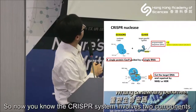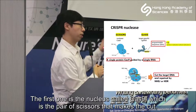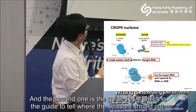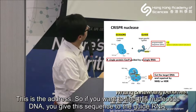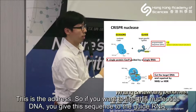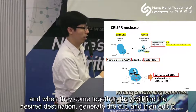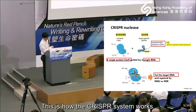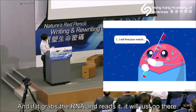The CRISPR system involves two components. The first one is the nuclease called Cas9, which is the pair of scissors that makes the cuts. The second one is the guide RNA, which guides the scissors to tell where they should cut. So the guide RNA is the address — if you want to find a specific nucleotide sequence in the DNA, you give that sequence to the guide RNA, and then when they come together they will find the desired destination, generate the cuts, and make the edit. This is how the CRISPR system actually works.